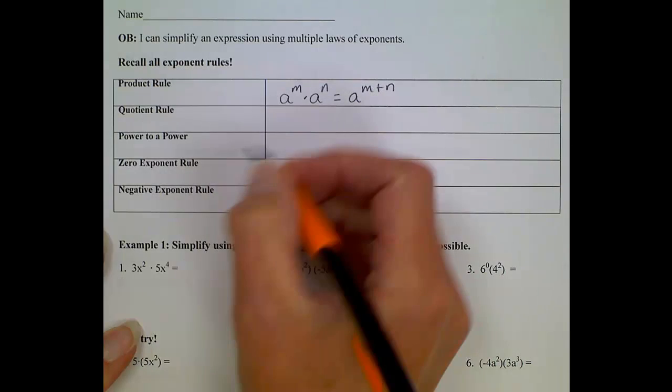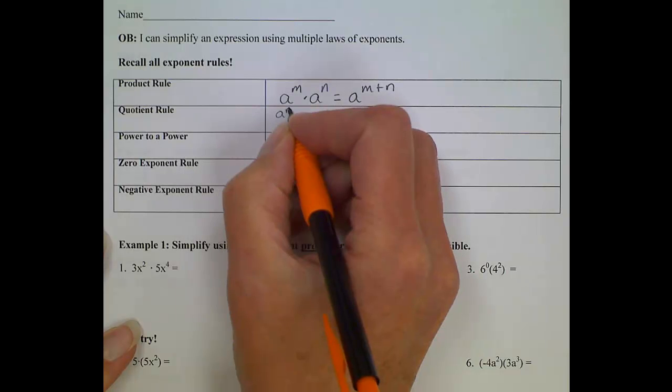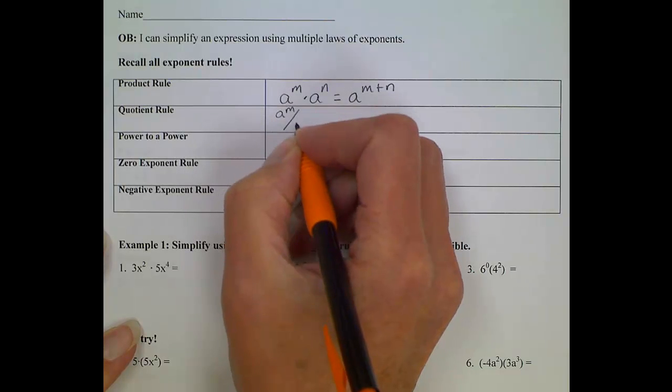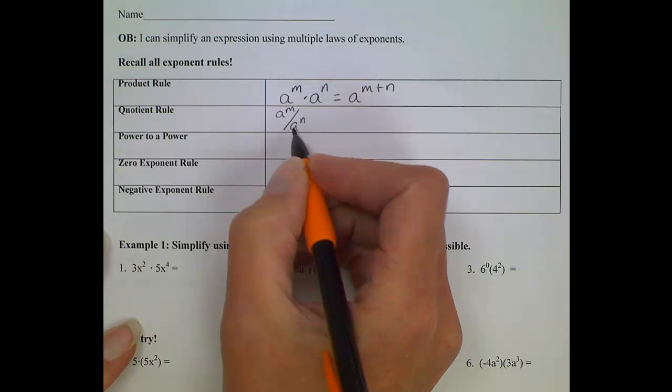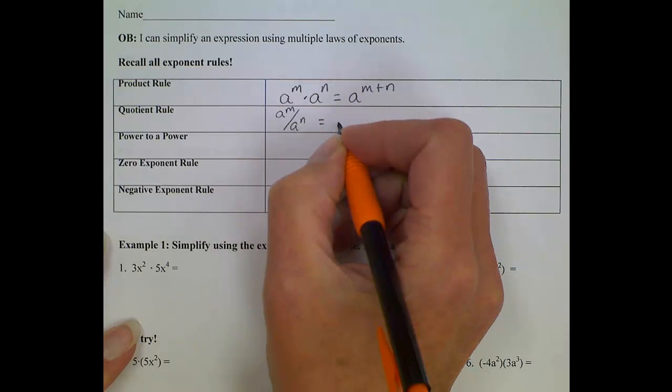The quotient rule for when we have a fraction. If we have a to the n power over a to the n power, the base is the same, we subtract those exponents.